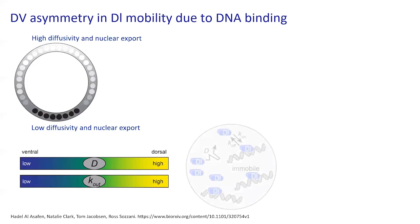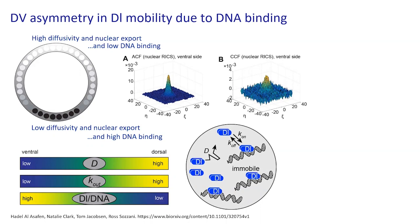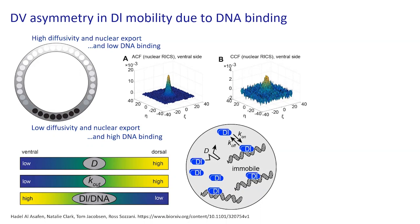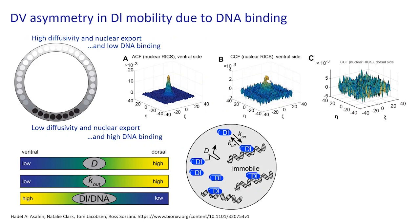So we have diffusion in the nucleus and also dorsal bound to the DNA. To figure out whether that's true and measure how much dorsal is bound to DNA, we use something called a cross-correlation. Up until this point we've been talking about autocorrelation — dorsal GFP fluctuations correlated to dorsal GFP fluctuations. Here we do a cross-correlation where dorsal GFP fluctuations are correlated to H2A RFP (histone red fluorescent protein) fluctuations, to correlate movements of dorsal with movements of the DNA.